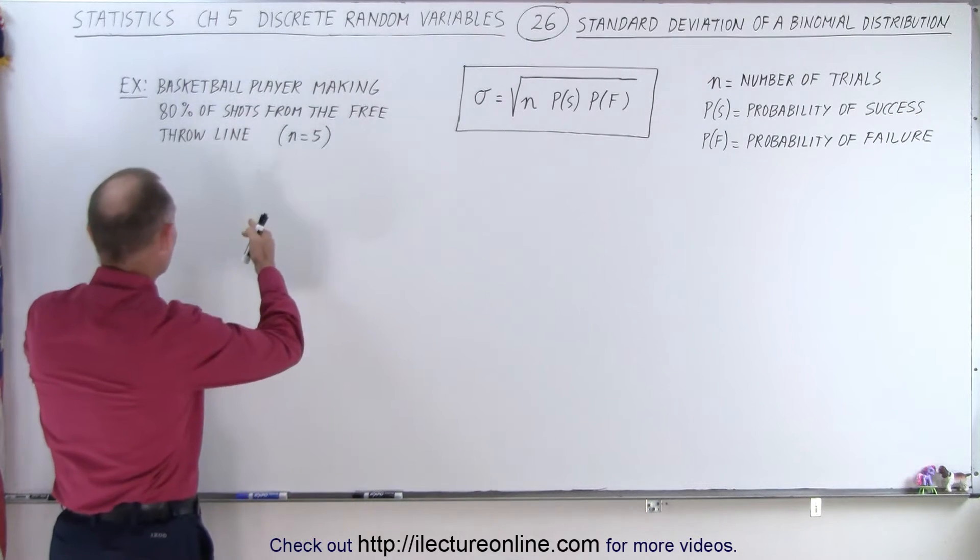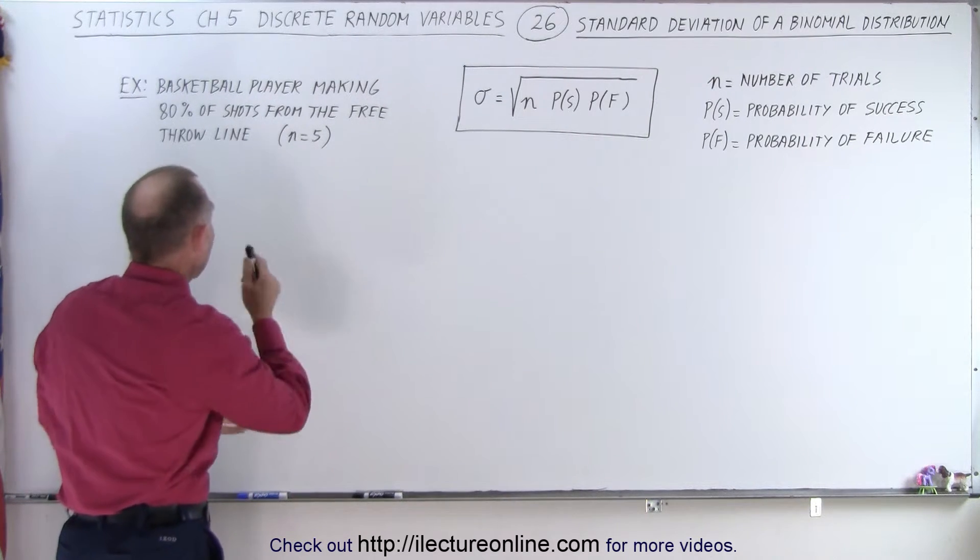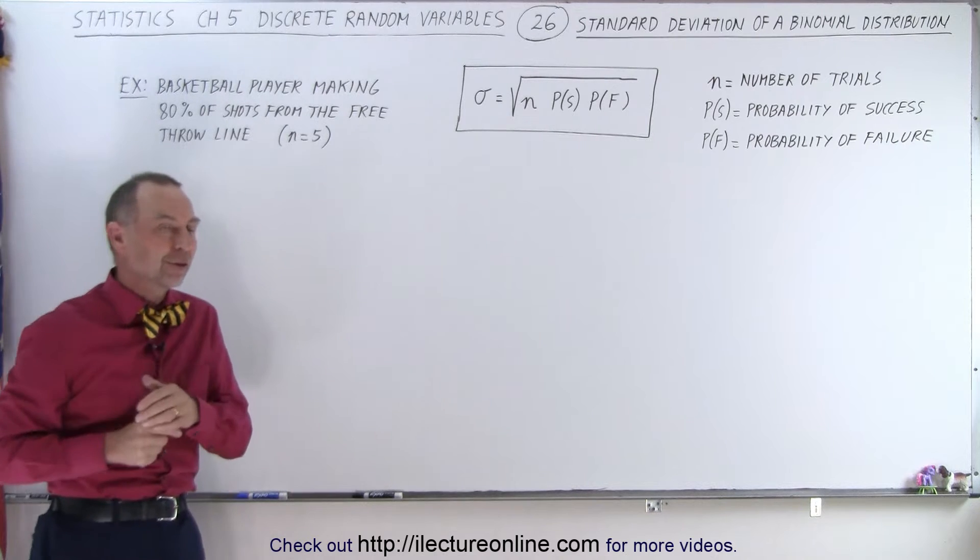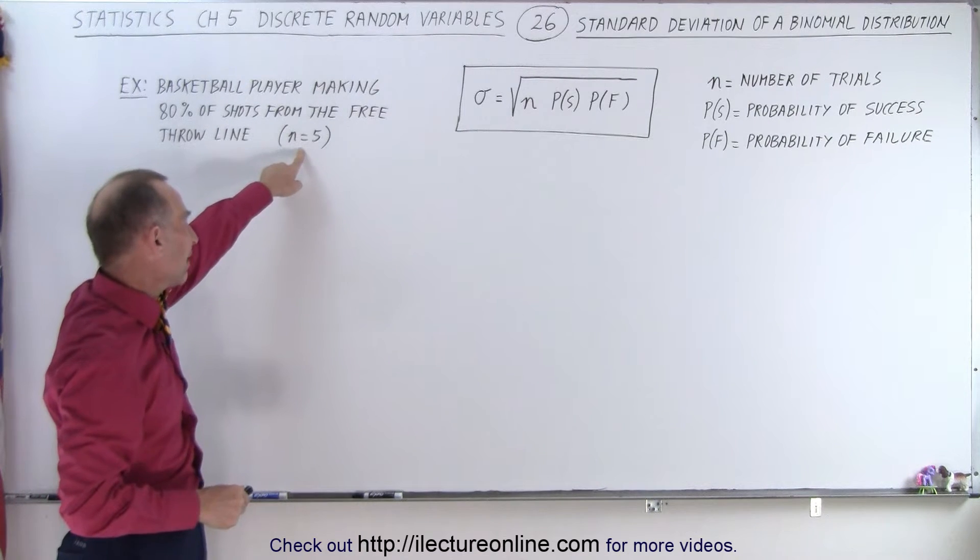And again we're going to use the same example as before, the basketball player who can make eighty percent of the shots from the free throw line and is going to have five attempts.